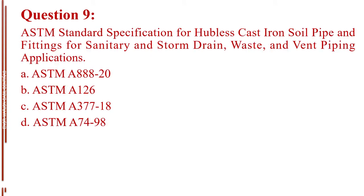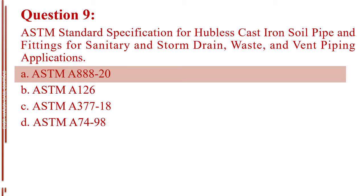Question number 9. ASTM standard specification for hubless cast iron soil pipe and fittings for sanitary and storm drain, waste, and vent piping applications. Letter A, ASTM A-888-20. Letter B, ASTM A-126. Letter C, ASTM A-377-18. Letter D, ASTM A-74-98. The answer is Letter A, ASTM A-888-20.